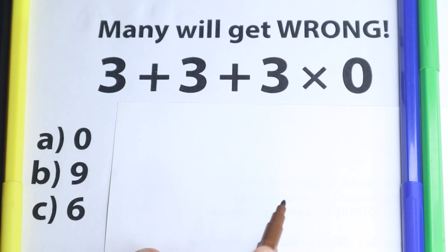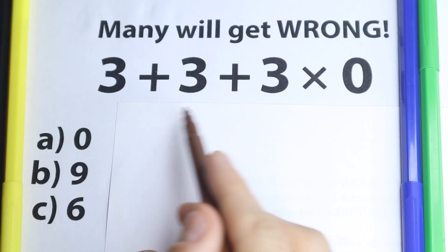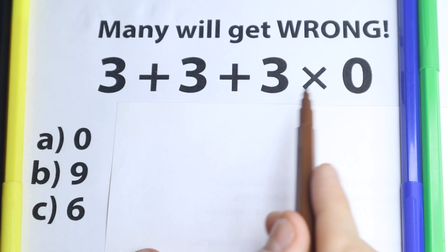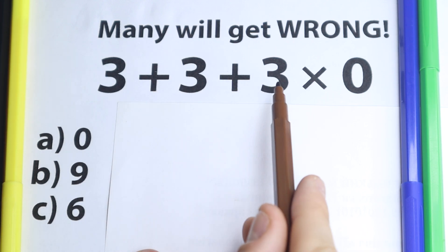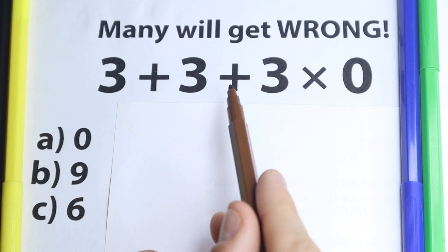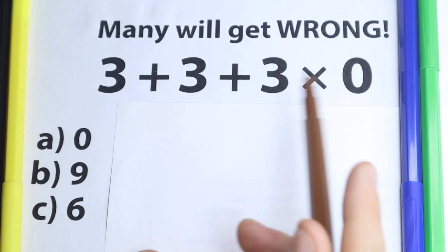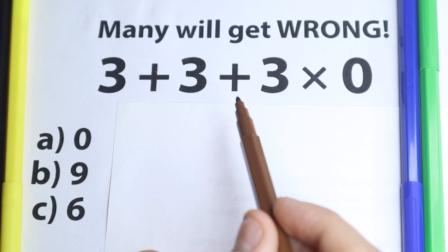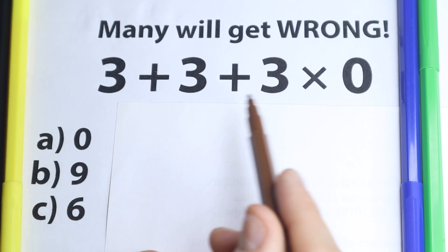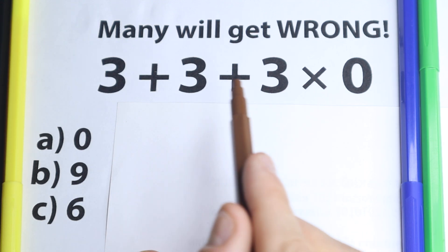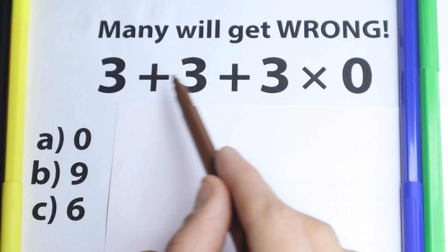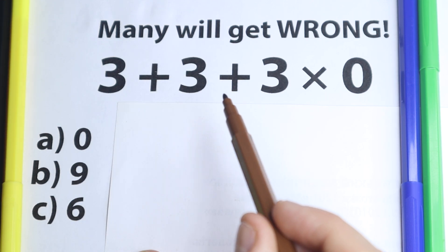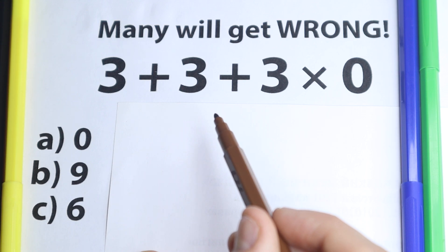Really interesting question today. On one side we have a very easy question — everyone learned addition and multiplication at school. We have 3 plus 3 plus 3 times zero, so a very easy question. But a lot of students make this mistake, and I wanted to record this video because a lot of students get this wrong. We have only addition and multiplication — very simple math operations.